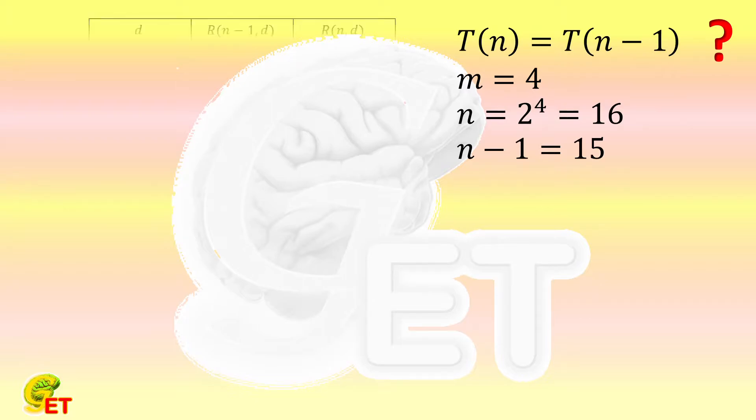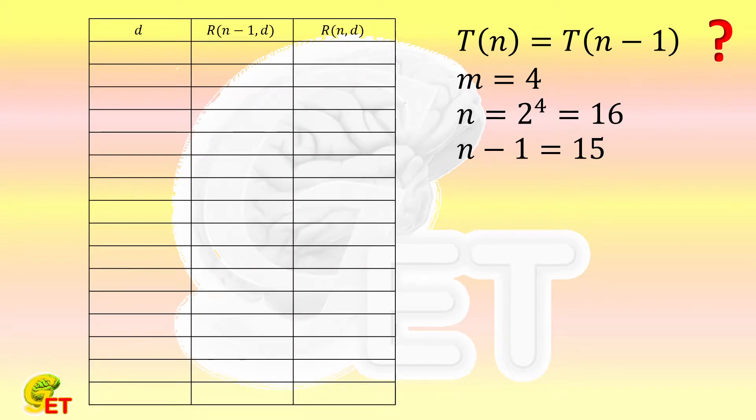Let's make a table and write down all the remainders we need. For n minus 1, d goes from 1 to 15. And for n, d goes from 1 to 16. But in fact, the remainder of n divided by n must be 0. So for 16, there is no essential difference between changing d to 16 or 15.